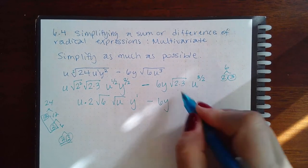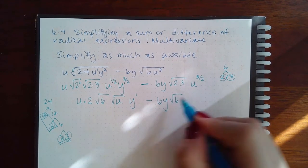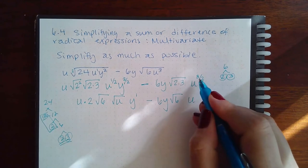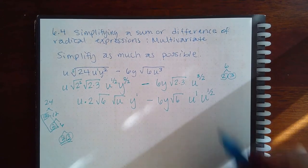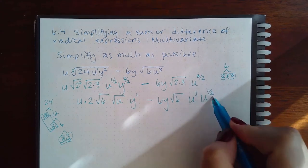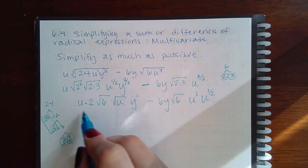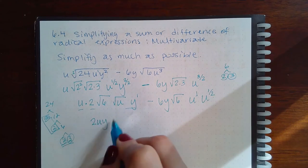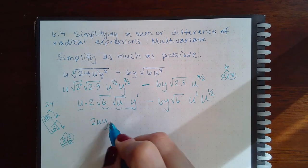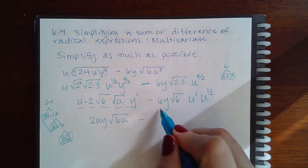Here you have 6y, you're going to multiply those two back together. Here though you get u to the 1 with one left over, so three halves is the same as one and a half. Then now you're going to multiply all of your outsides together so 2uy and then your insides together so 6u.